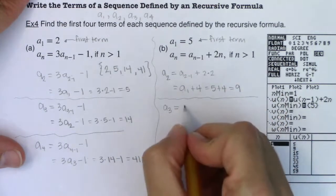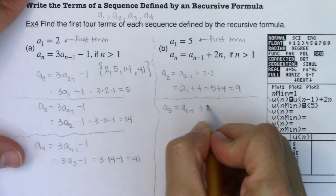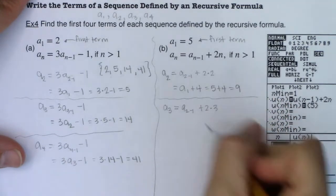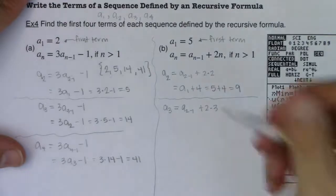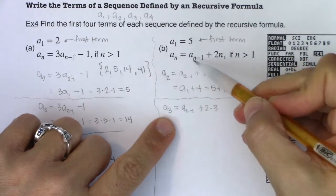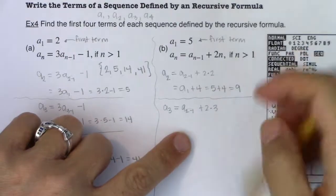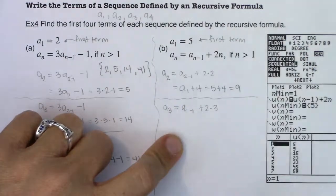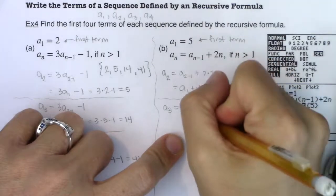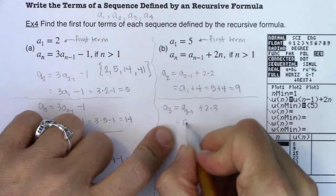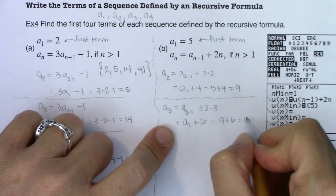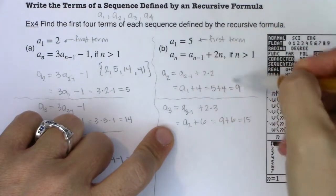Now for a₃. Wherever I see n I write 3: a₃ = a(3-1) + 2(3). I noticed a typo — it should be a(3-1), not a(2-1). Correcting that: a₃ = a₂ + 6. Since a₂ = 9, that's 9 + 6 = 15. So the first three terms of my sequence are 5, 9, 15.